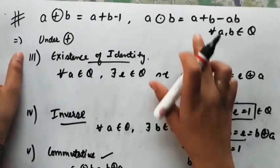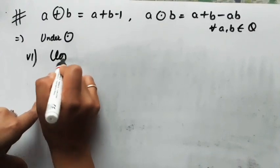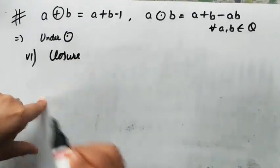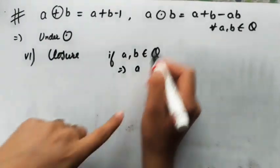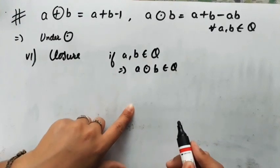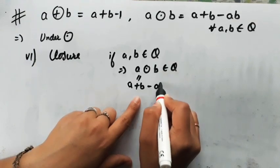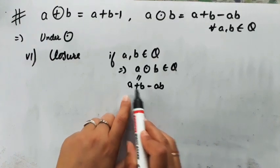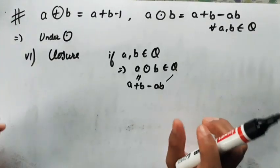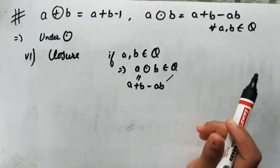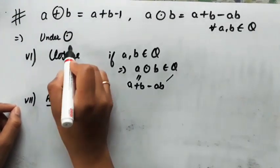Now we go under multiplication. The sixth property is the closure property under multiplication. If a, b belong to Q, then a·b = a+b-ab should also belong to Q. Since a and b are rational, their sum a+b is rational, their product ab is rational, and therefore a+b-ab is rational. So closure under multiplication is proved.